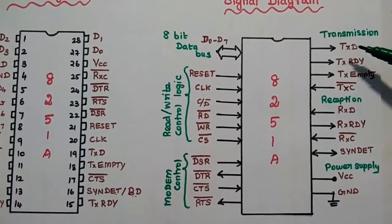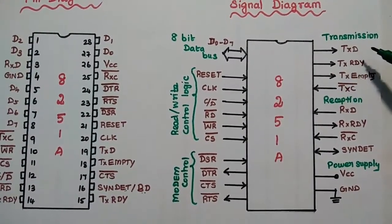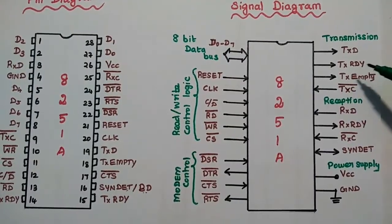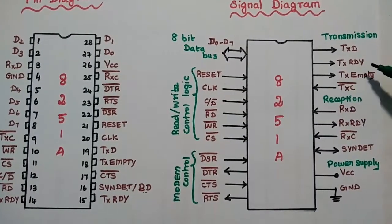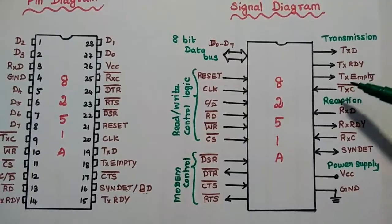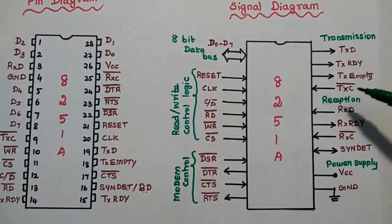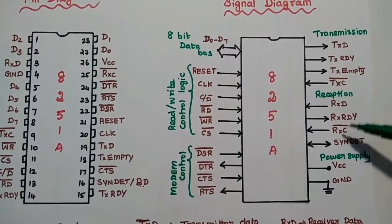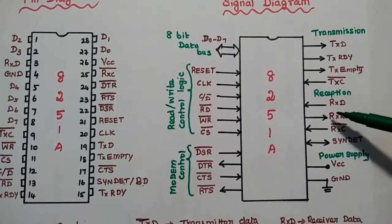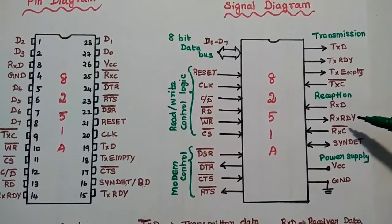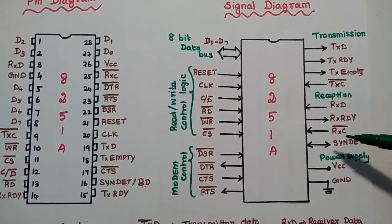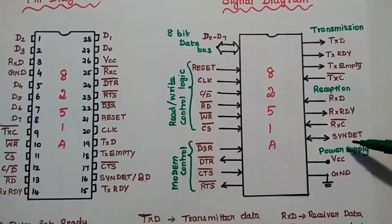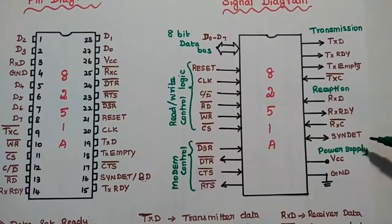The transmission-related signals are TXD (transmitter data), TXRDY (transmitter ready), transmit empty, and the transmitter clock signal. Similarly, for reception we have RXD, the RXD ready signal, the reception clock signal, and the synchronous detect signal.